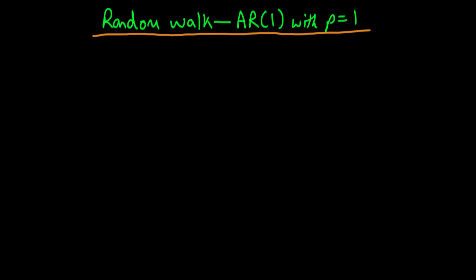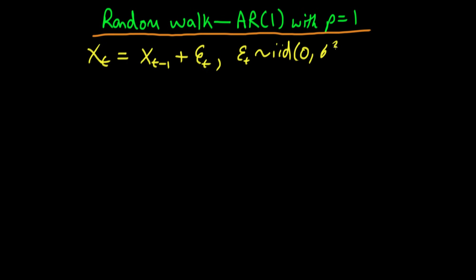In this video, I want to talk about an AR(1) process with rho equal to 1, which another word for that is a random walk. We know that this particular process is going to look something like Xt = Xt-1 plus some error Et, where Et is IID with a mean of 0 and a variance of sigma squared.